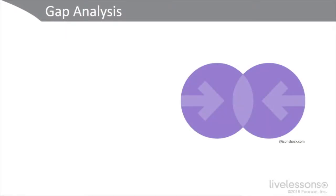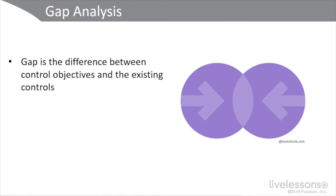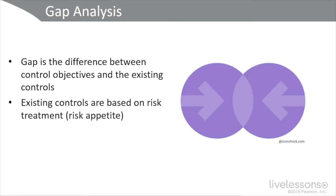You need to do a gap analysis to see where you are — benchmarks and baselines. A gap analysis is the difference between control objectives and your existing controls. The existing controls are based on your risk treatment or your risk appetite.